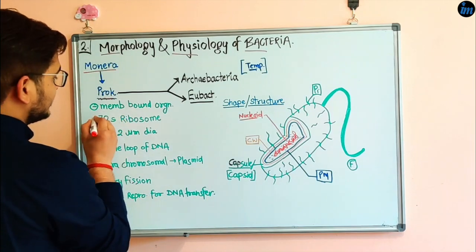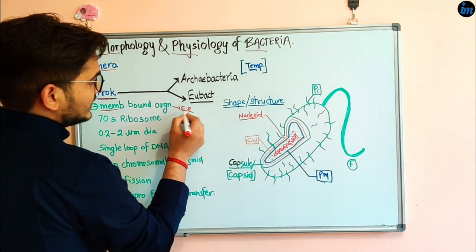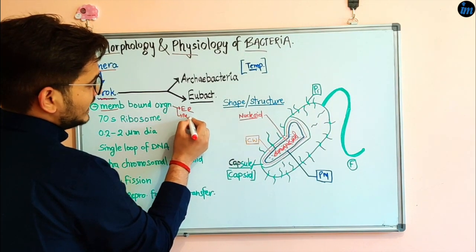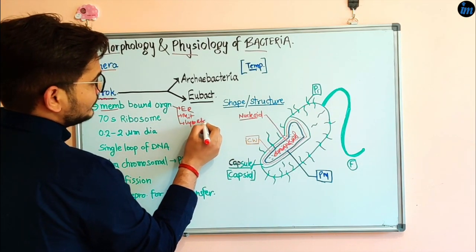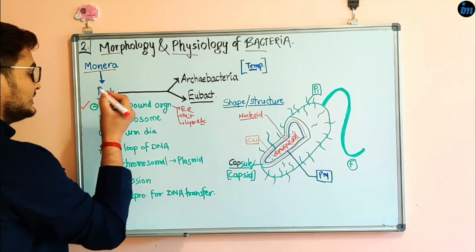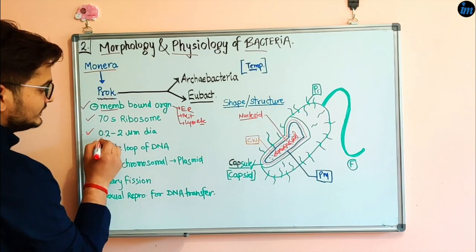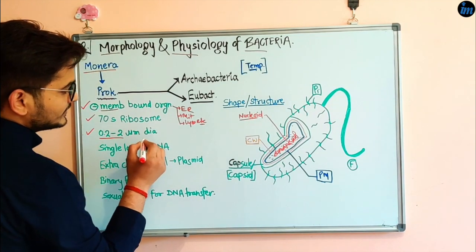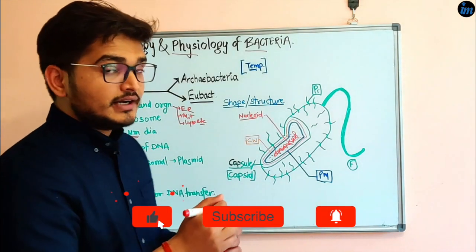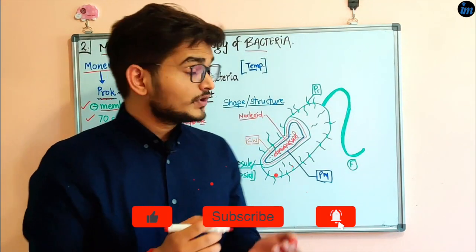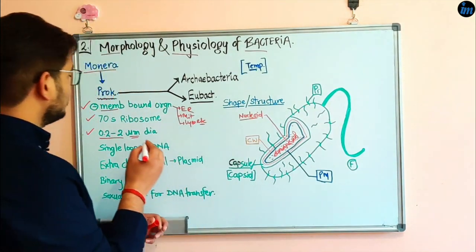The peculiarities of Monera: they lack membrane-bound organelles — basically endoplasmic reticulum, mitochondria, lysosome, etc. Second, they have 70S ribosomes. Third, they have a diameter of 0.2 to 2 micrometers. They are that small — in the micro level — that's why we can't see them with our naked eyes, which is why we study microbiology.